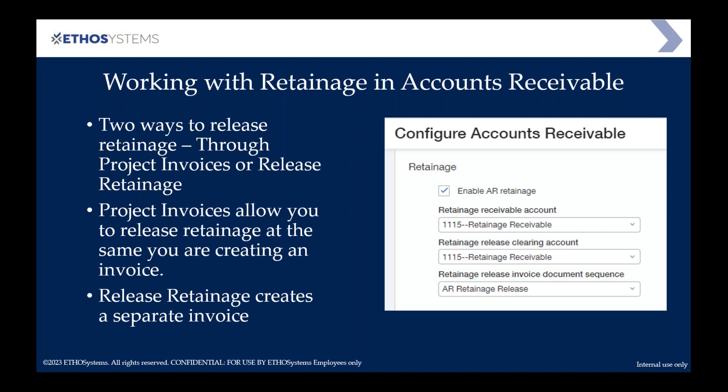Since then, they have added something called project contracts. As we discussed in our previous webinar — available on our YouTube channel and Ethosystems webpage — project contracts allow you to use something called project invoices, which lets you generate the AIA forms that people have been wanting. One of the things they just recently added is the ability to release retainage when you're invoicing. In the past, people would send out an invoice and then a second invoice for the retainage release. That does not need to be done anymore. You can either do it through project invoices or through release retainage.